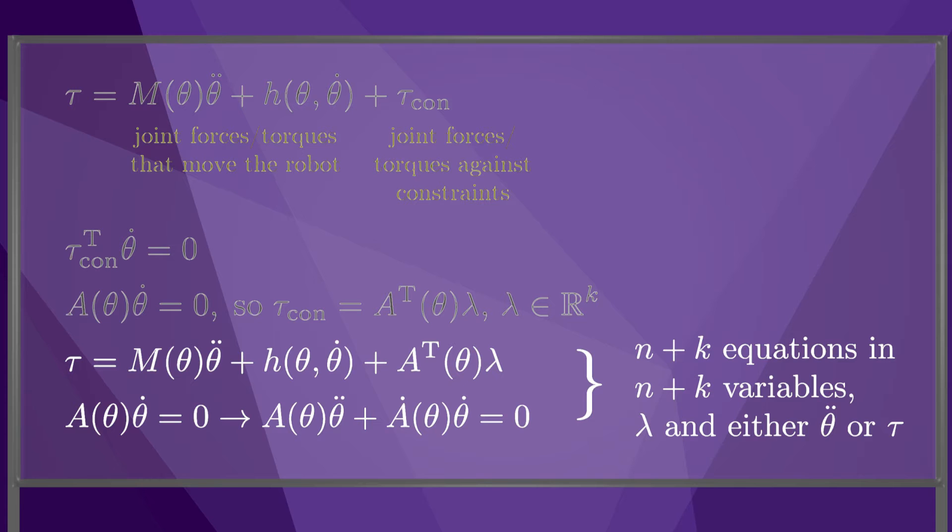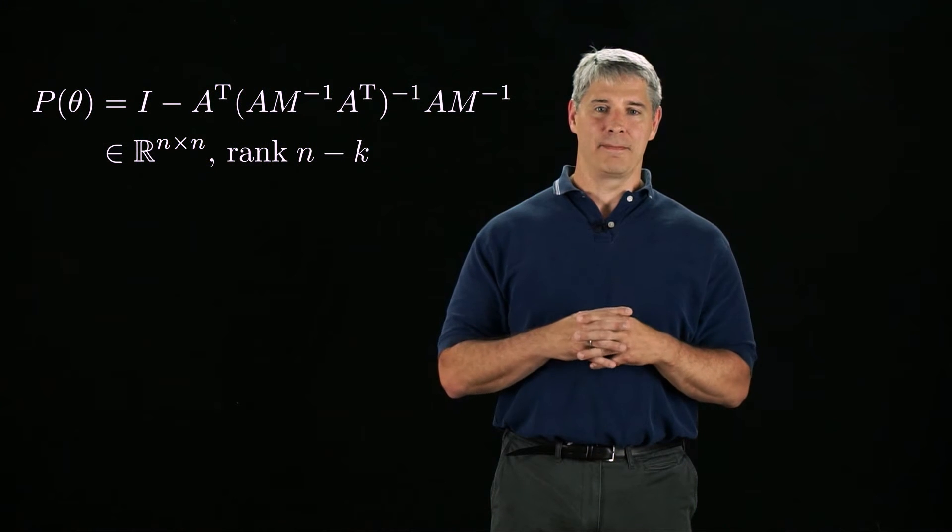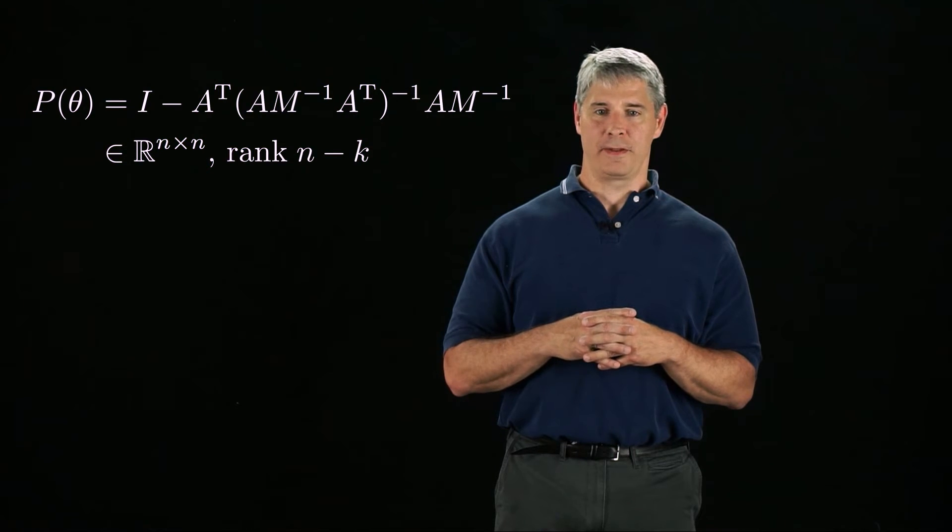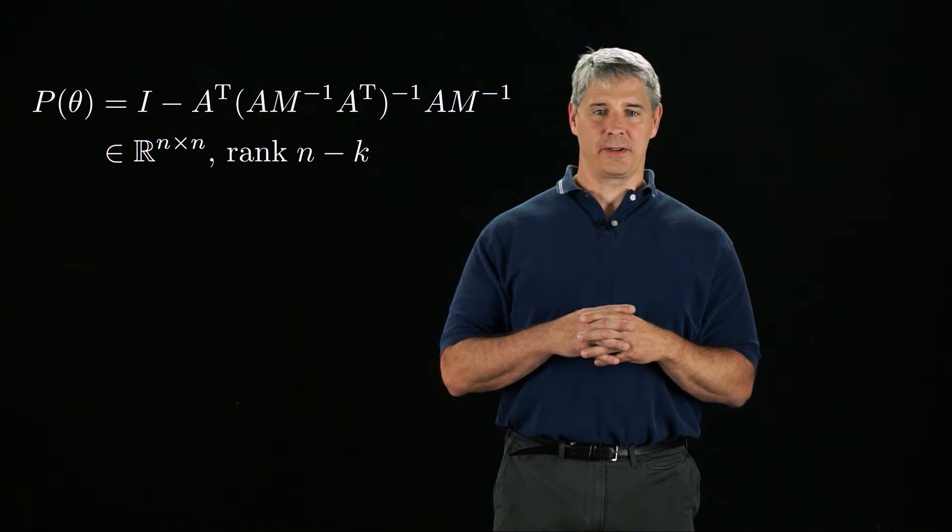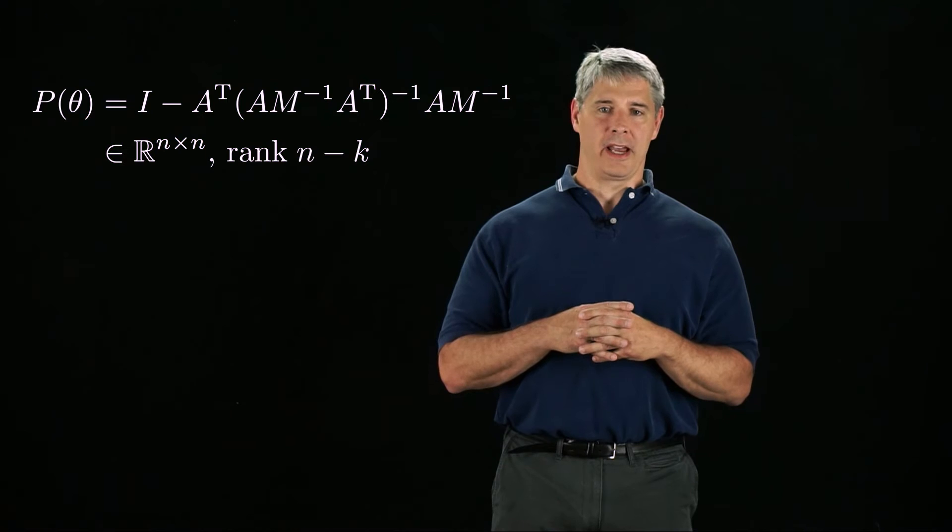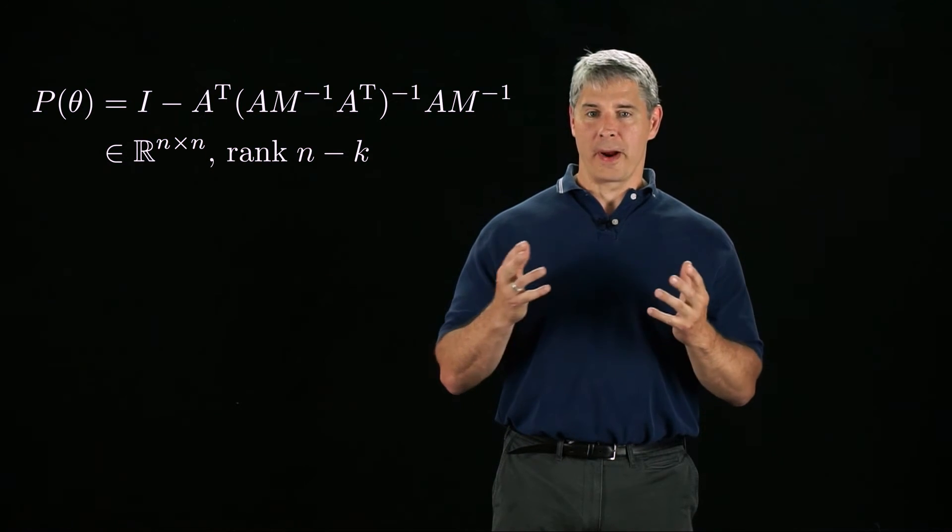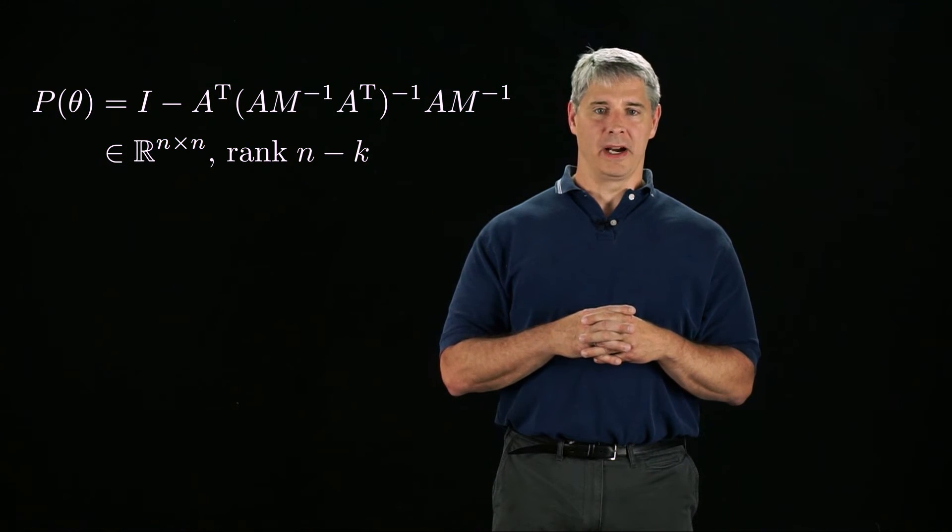Skipping the derivation, which is given in the book, we can eliminate the k Lagrange multipliers by defining an n by n projection matrix, P of theta, equal to the n by n identity matrix minus A transpose times the inverse of A M inverse A transpose times A M inverse. The rank of this n by n matrix is n minus k.